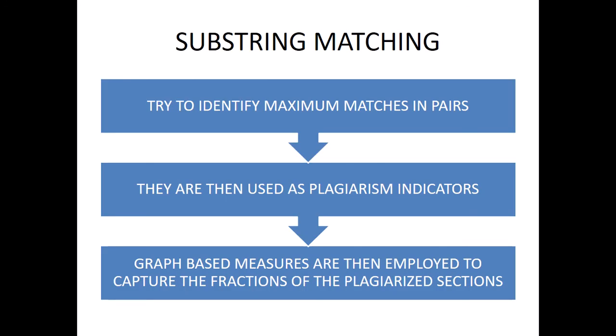Substring matching tries to identify maximum matches in pairs, which are then used as plagiarism indicators. Graph-based measures are employed to capture the fractions of plagiarized sections. It examines schema matches — how much content is being taken from any source — and substring matching handles that identification.